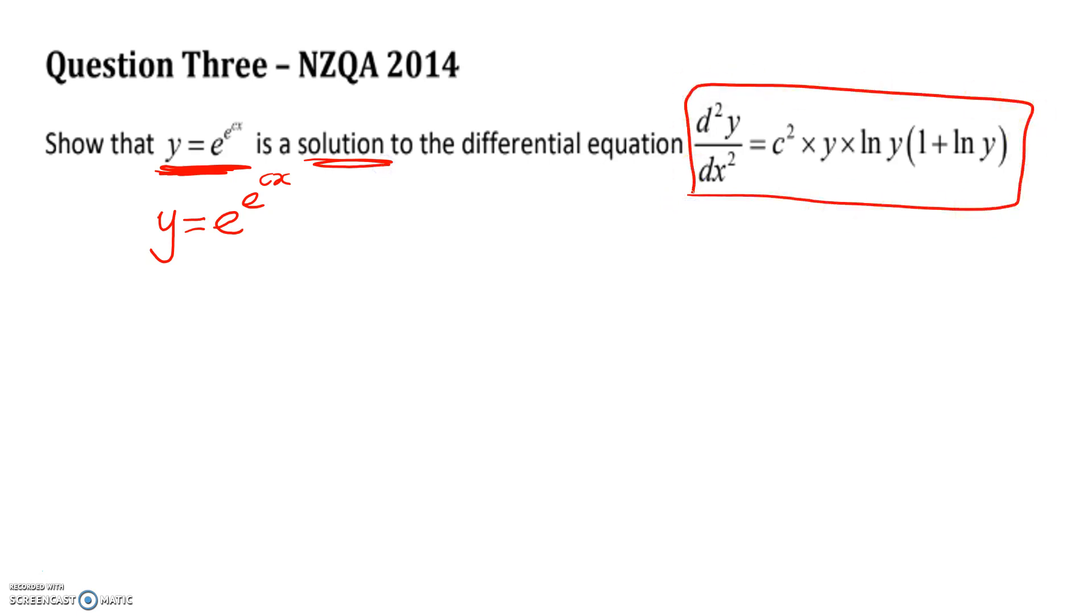So if you remember from Level 3 Calculus, when we taught you how to verify that things were DEs, your teachers all probably said that really this is not about integration, it's about differentiation. So if you try to attack this question by attempting to integrate this thing twice, you're going to get into a huge mess. But if instead you differentiate this twice, and then show that it fits this, it comes out quite nicely.